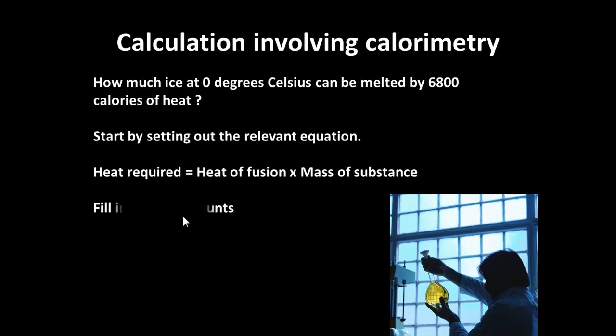A typical calculation involving calorimetry: How much ice can be melted by 6,800 calories of heat? The heat required will be equal to the heat of fusion times the mass of the substance. We have 6,800 calories, and we know that the heat of fusion is 80. So 6,800 must be equal to 80 times the mass, which comes to 85 grams.